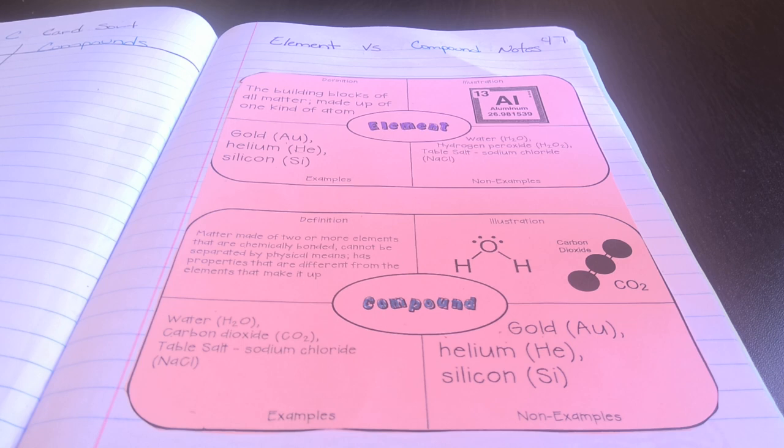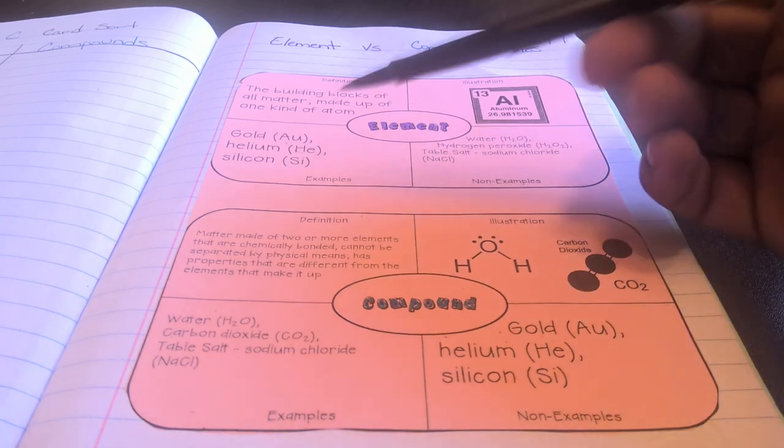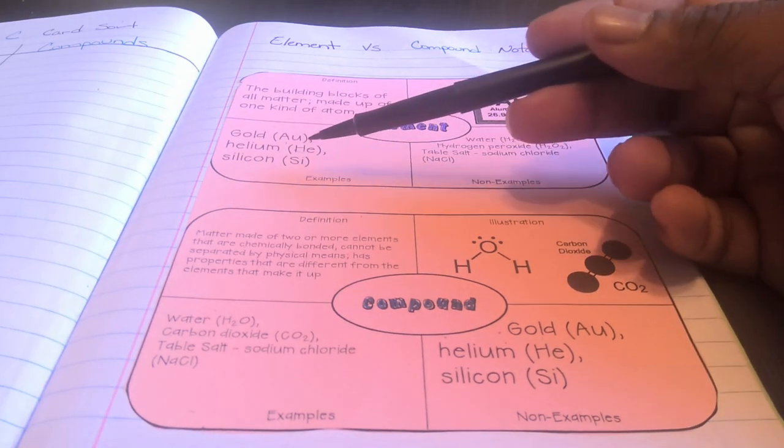Atoms of an element are the building blocks which make up matter or makes up everything. When we look at the periodic table, we see that there are over 100 boxes called element cards. These boxes represent individual elements like aluminum or gold, helium or silicon.